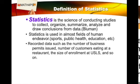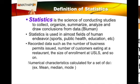Recorded data — such as the number of business permits issued by a city, the number of customers eating at a restaurant, or the size of enrollment at USLS — are examples of statistical data. Numerical characteristics calculated for a set of data, such as mean, median, and mode, are also under the field of statistics. Most importantly, statistics is known as the backbone of research.